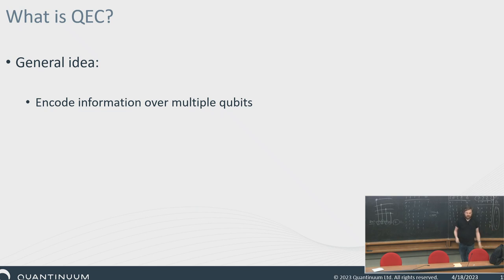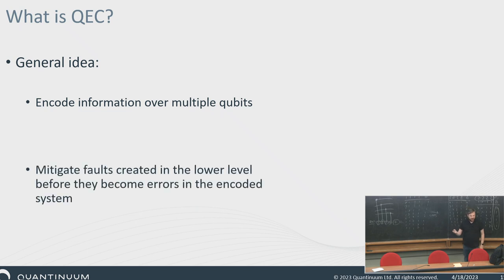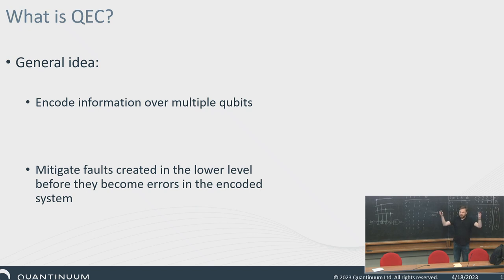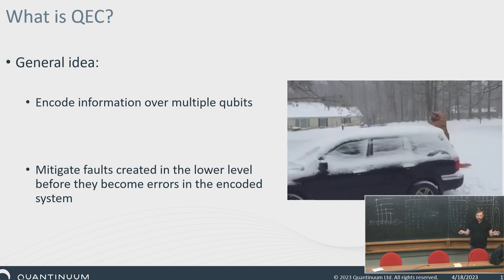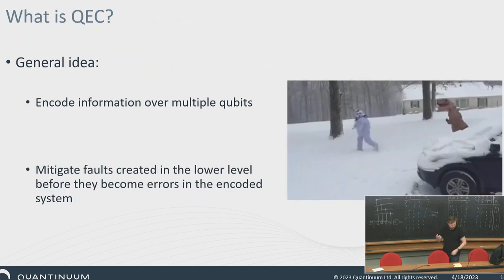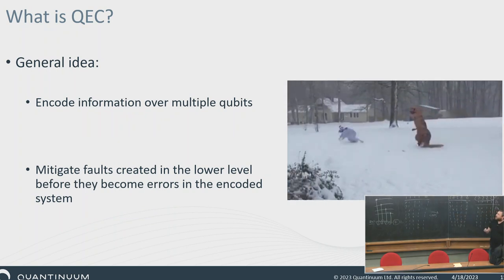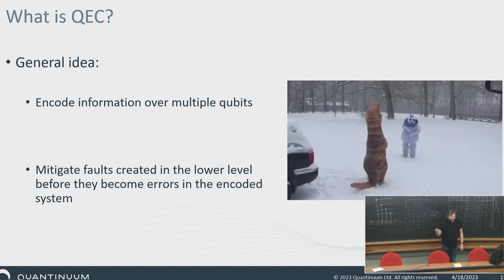Quantum error correction is about encoding information over multiple qubits. Once you have this encoded system, you use the qubits as a substrate for another system built on top. Because you're building a system on top of another system, you can play a game where you detect faults and mitigate them faster than they can corrupt your higher-level logical system. That's the main idea — it's effectively a fancy refrigeration where we fight errors. The screen went black and then came back — so we experienced an error, and luckily the system recovered.